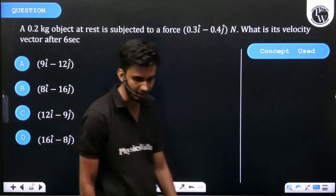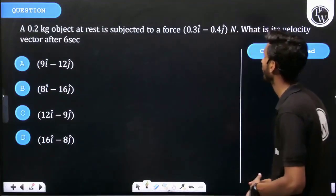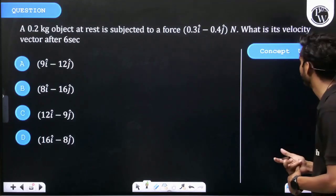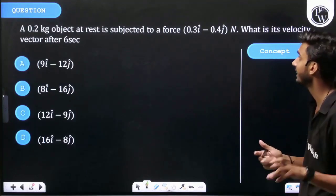Okay, let's see the question. A 0.2 kg object at rest is subjected to a force 0.3i minus 0.4j kN. What is the velocity after 6 seconds?